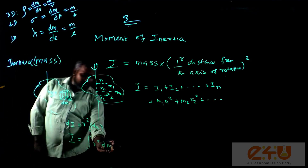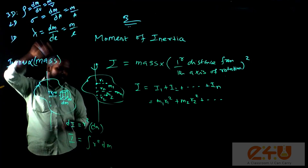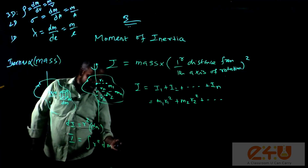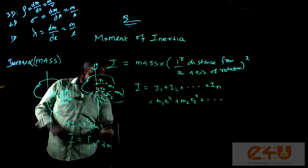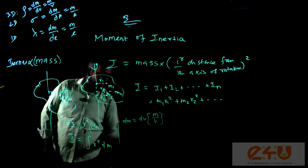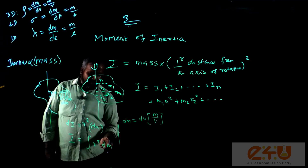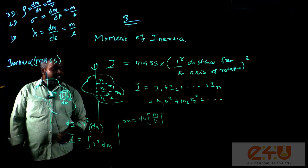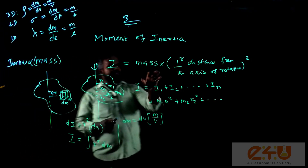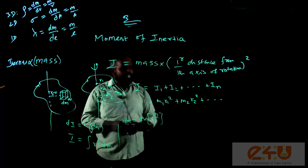We find dm by using the appropriate distribution relation. For a three-dimensional body, dm = (m/V) · dV. Substituting dm into the integral gives the moment of inertia of the rigid body. The SI unit of moment of inertia from this expression is kilogram·meter² (kg·m²).